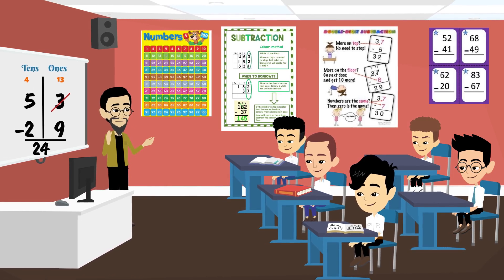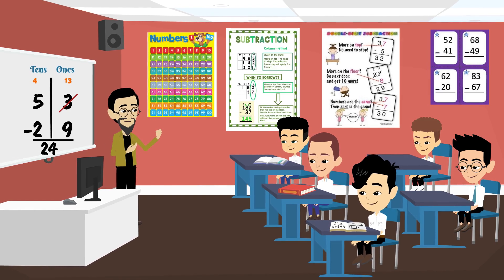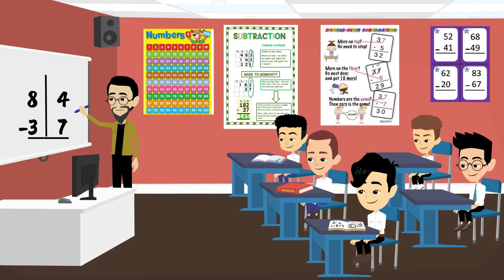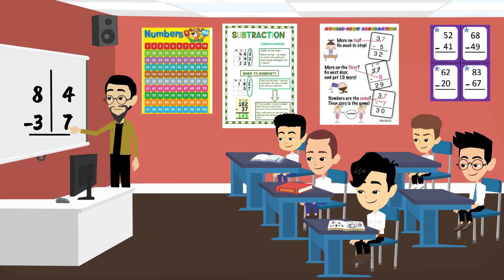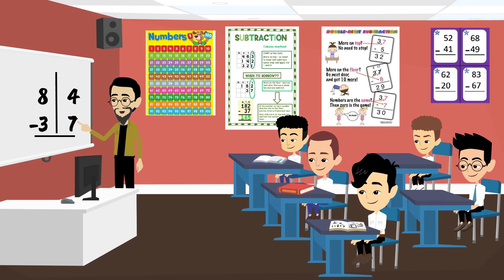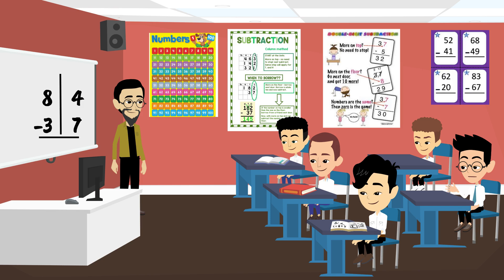Now, let's practice together. I want each of you to try this one: 84 minus 37. First, look at the one's place. Can we subtract 4 minus 7? No. We need to regroup.